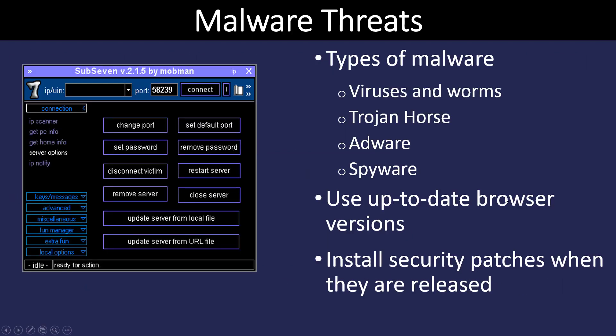There are many types of malware. We have viruses and worms, Trojan horse, adware, and spyware. A virus is malware that's principally designed to spread to other PCs. A Trojan horse is something that looks legitimate — like a legitimate application that conceals malicious software within it. Adware is software installed on your computer that tracks where you're going and displays ads to you. Spyware is similar to adware, only instead of serving you ads, it collects information and sends it back to somebody else.